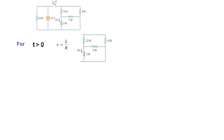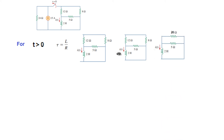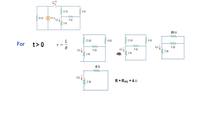I0 we have found. Now we need to find τ. τ = L/R, so we need to find the equivalent R. At t greater than 0 the switch is open, so that portion goes out. From the inductor, we look at the whole circuit — these two resistors are now in series, giving 20 in parallel with 5, which solves to 4. So R equivalent is 4 ohm.